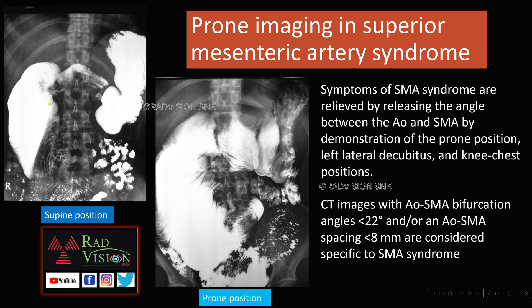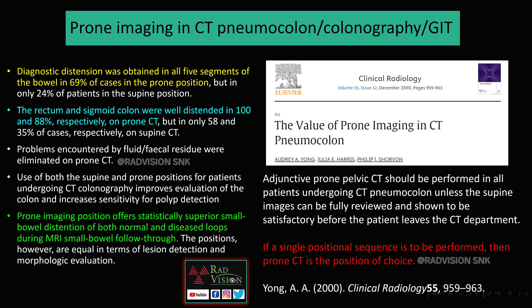Prone imaging is also useful in superior mesenteric artery (SMA) syndrome. In a supine barium follow-through, there is abrupt cutoff at the third part of the duodenum due to compression between the aorta and the SMA. In prone position, this obstruction is relieved and barium flows freely into jejunal loops. Symptoms of SMA syndrome are relieved by releasing the angle between the aorta and SMA in prone, left lateral decubitus, or knee-chest position. Remember the diagnostic angle values for SMA syndrome.